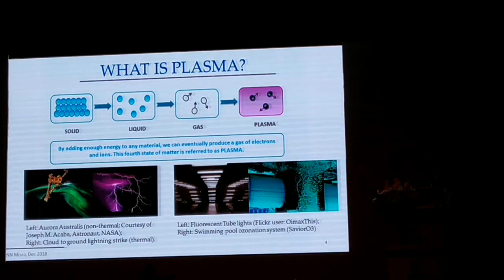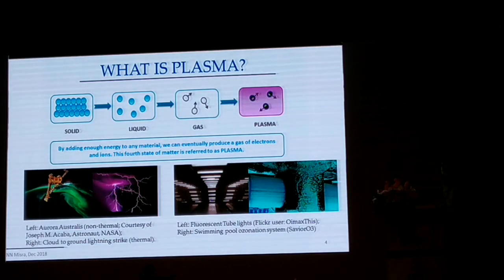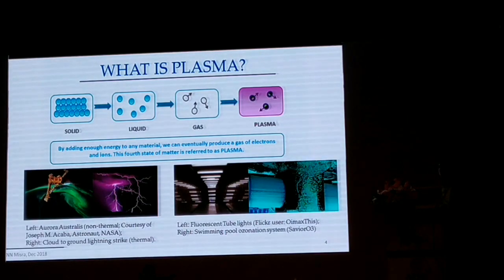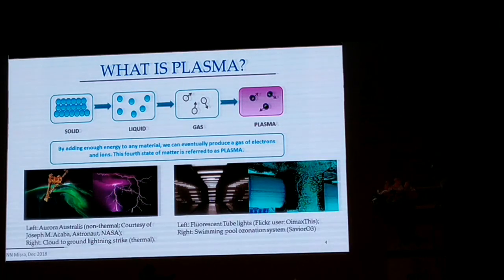Plasmas occur naturally on our planet. The aurora on the left picture happens in the ionosphere region where the gas gets ionized, and you see all those different colored lights because of electron transitions in nitrogen and other gases. Likewise, lightning from cloud to ground is also a plasma - it is thermal plasma, and it can kill because of the heat. Fluorescent lamps are essentially plasmas at lower pressure, and ozonators used in swimming pools are also plasmas where you ionize oxygen to generate ozone.